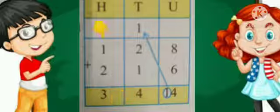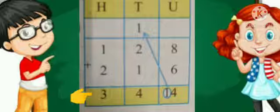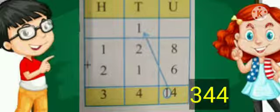Now let's add the hundreds place. One plus two gives us three hundreds. So the addition of the two numbers is three hundreds, four tens, and four units — that is three hundred and forty-four.